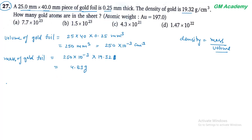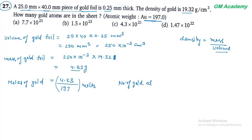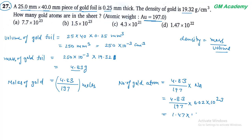Mass of gold foil 4.83 gram आ गया। Moles of gold = 4.83 / 197 (gold का atomic weight)। Number of gold atoms = (4.83 / 197) × 6.02 × 10²³ = 1.47 × 10²², जो option D से match कर रहा है।